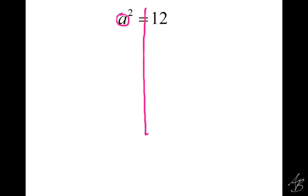Now there's another reminder we're going to give ourselves here, and this one is because it has a square — and that's boxing the square. We want to box the square. As a reminder, we need to get that square by itself, and then we'll get rid of the square.